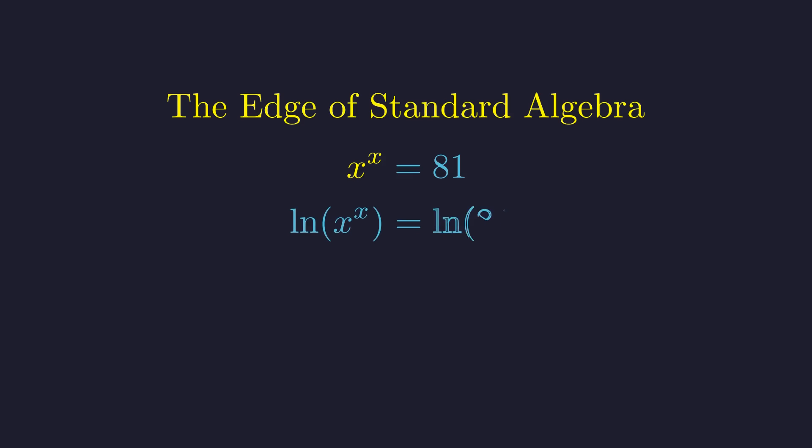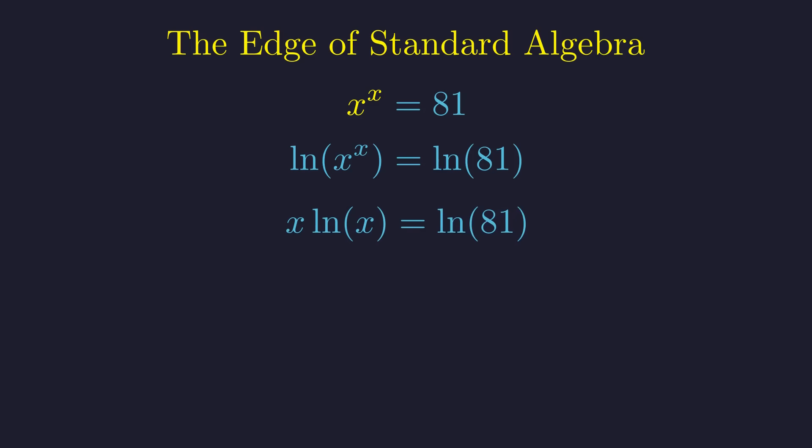We apply the natural logarithm to both sides of the equation. Applying the power rule for logarithms, we move the exponent x to the front, resulting in x times the natural log of x equals the natural log of 81.